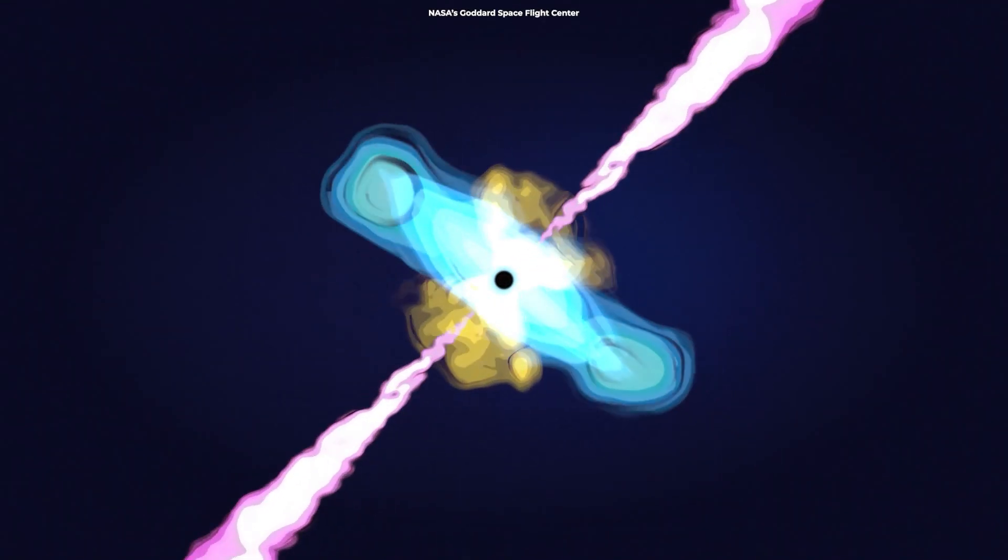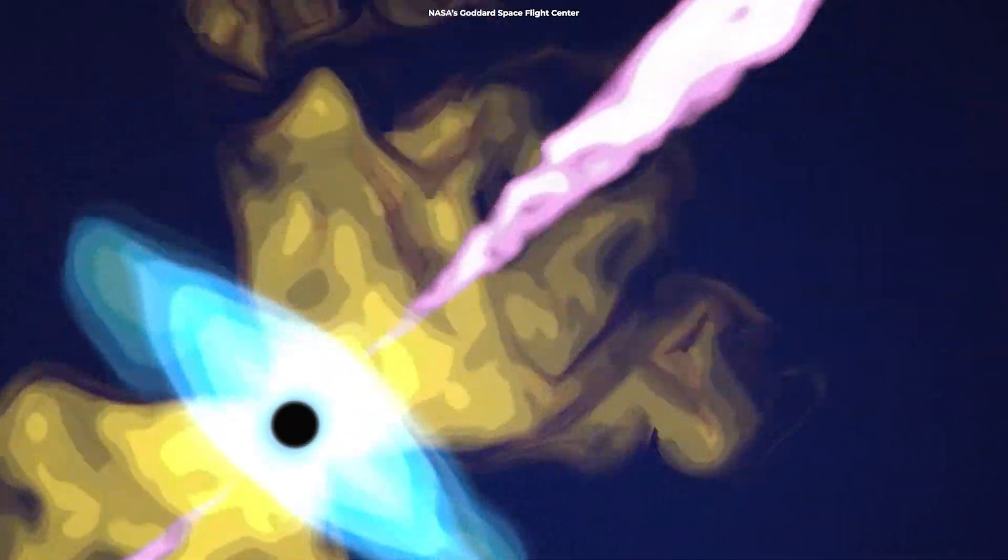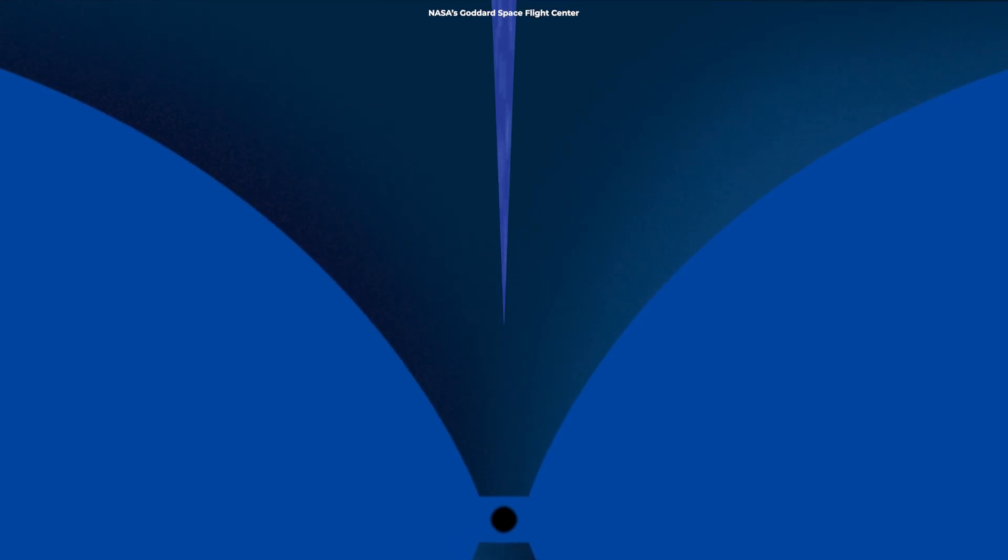Because the jet was pointing directly at Earth, the event was observable in visible light. This means the discovery could sprout a new way to observe such extreme events that we can usually only detect in high-energy light, such as gamma rays and X-rays.